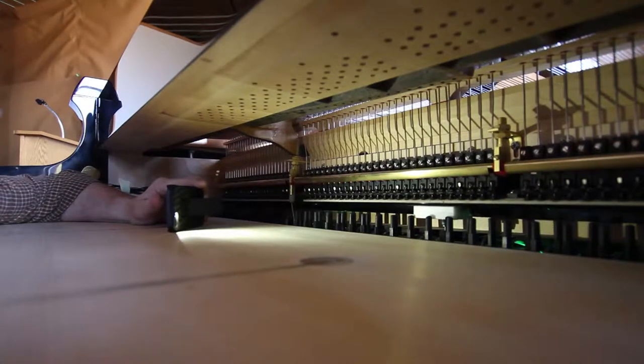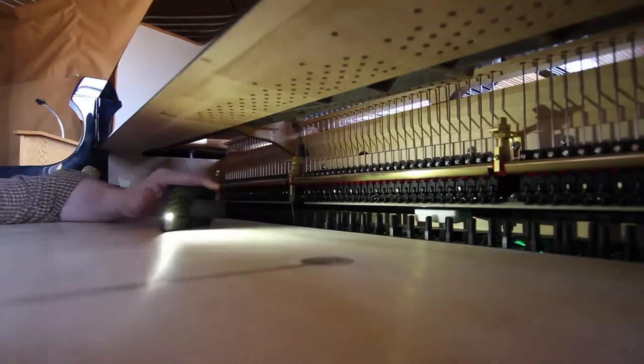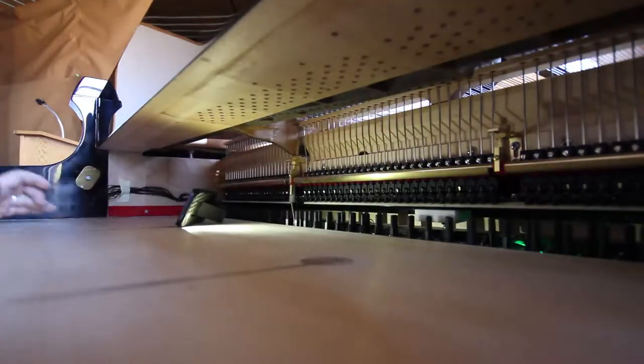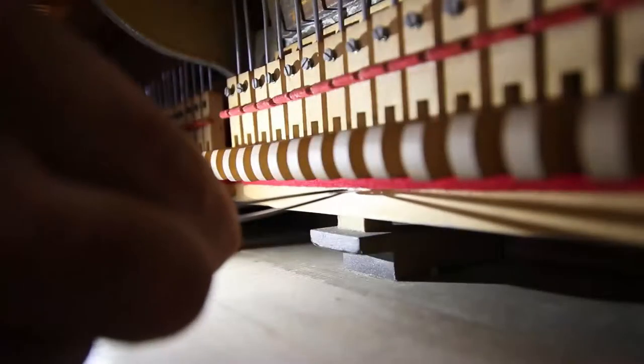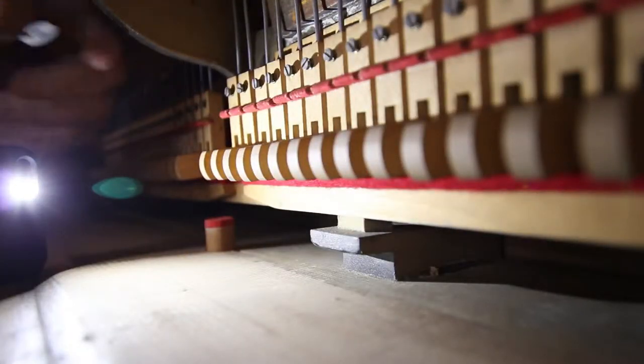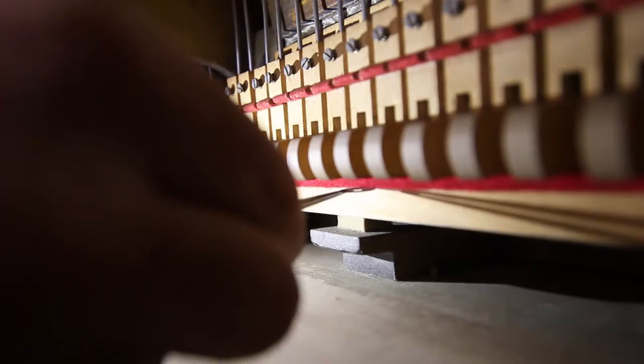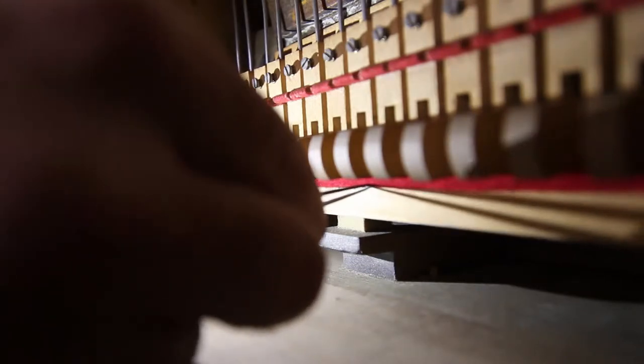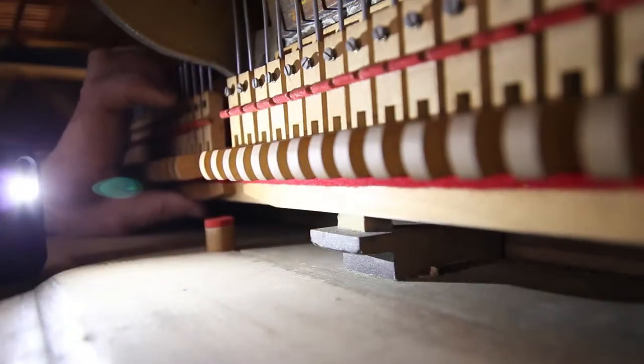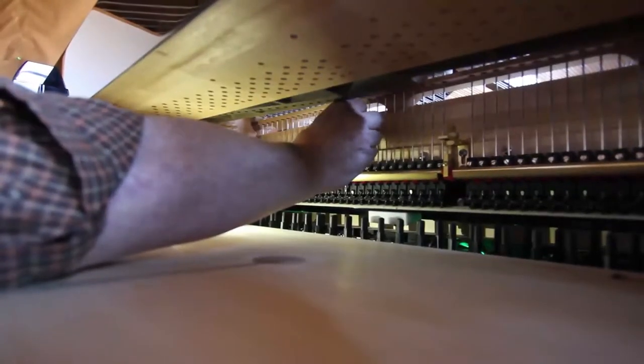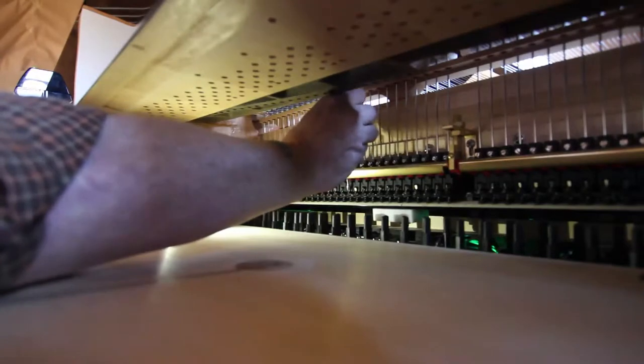Adjust the damper lever pickup in whatever way is required by the design of this particular damper action. On Steinways and a number of old pianos, you will need to place shims, usually balance rail punchings, between the pickup felt and the tray. On most other pianos, there will be a capstan or other screw adjustment to alter the damper pickup.